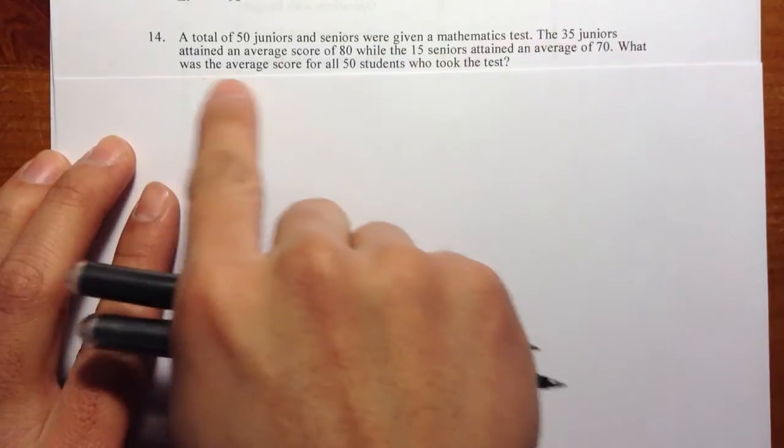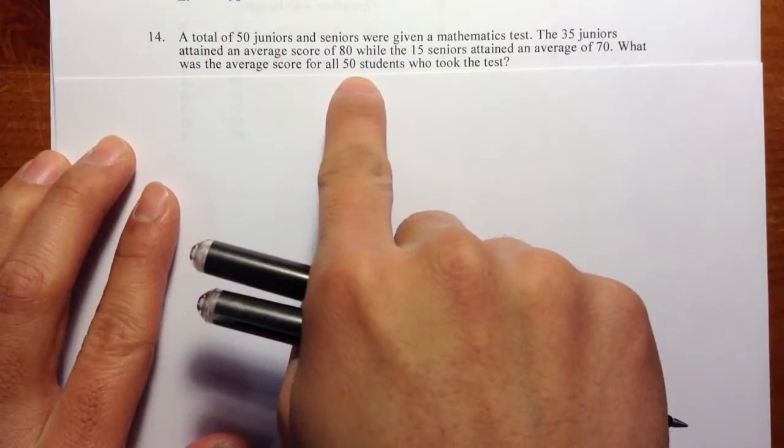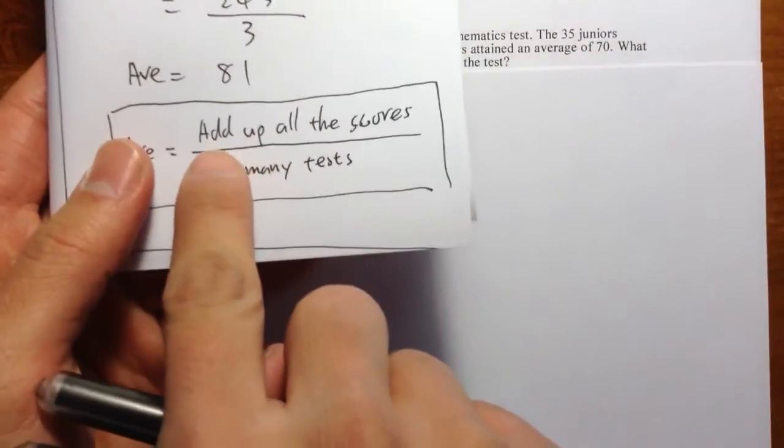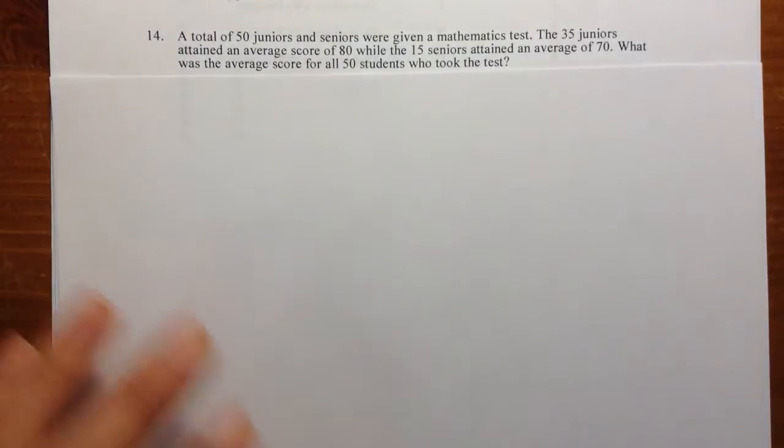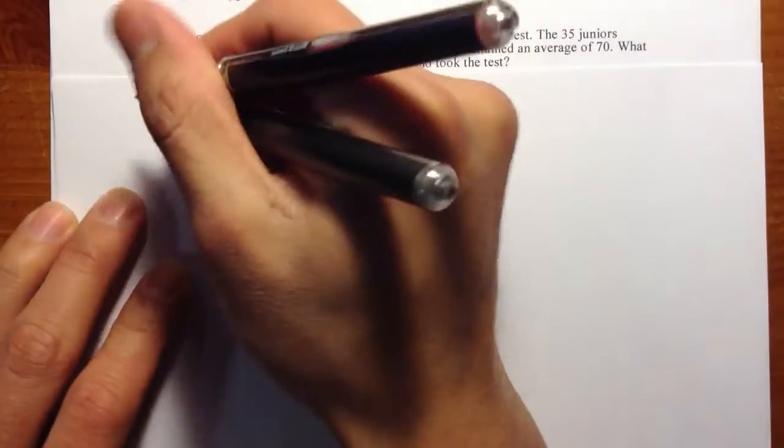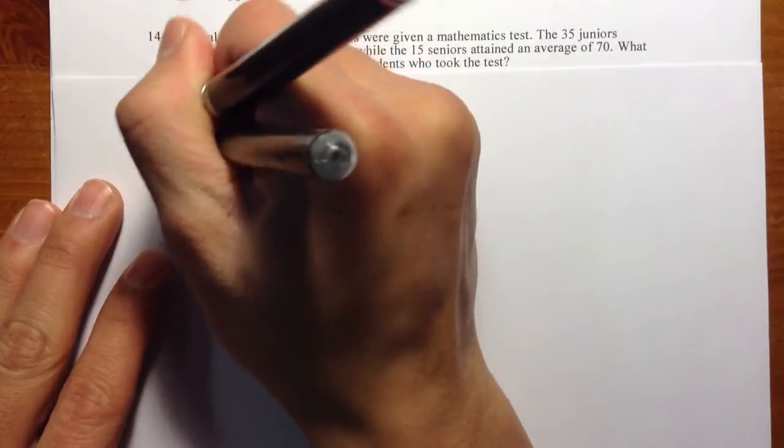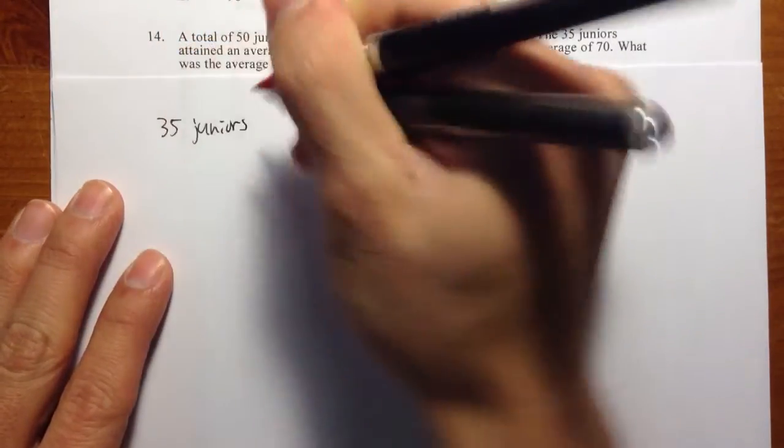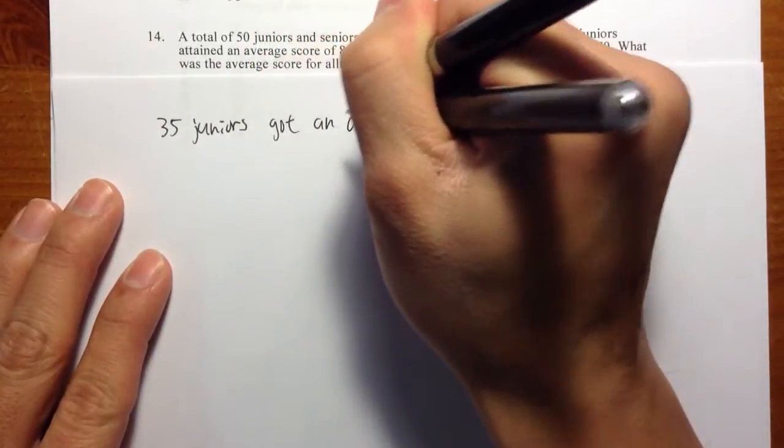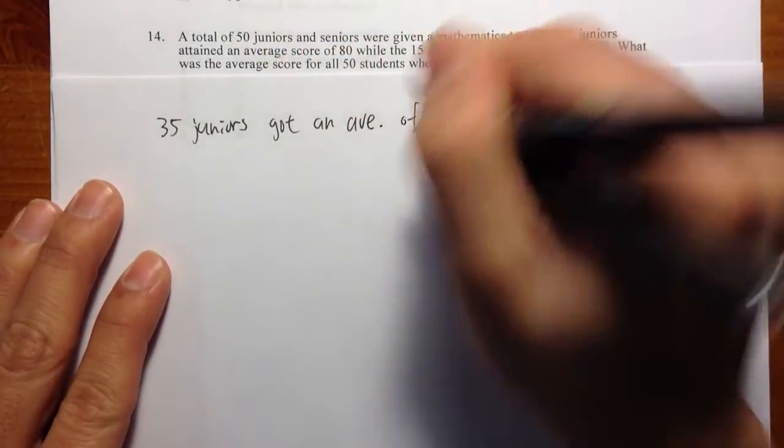So what was the average score for all 50 students who took the test? So what we need to do is we need to find out the sum of the scores. So let's do it with the juniors first. So we have 35 juniors.